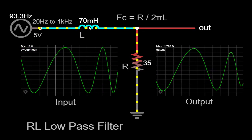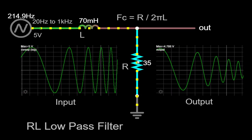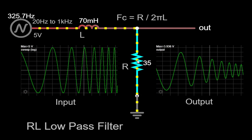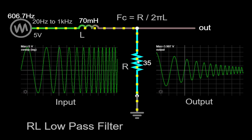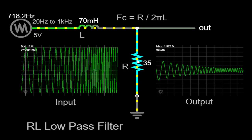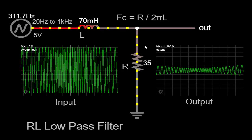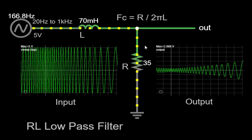The inductor stores energy in its magnetic field, while the resistor dissipates energy as heat. Together, they form a filter that allows low-frequency signals to pass through while attenuating higher frequency signals. The RL low-pass filter is designed to selectively allow low-frequency components of a signal to pass through while attenuating higher frequency components.